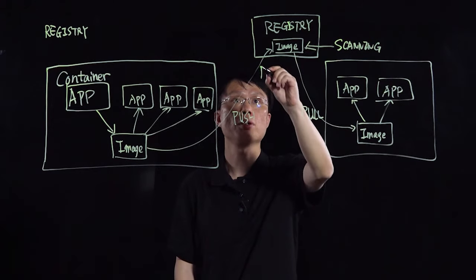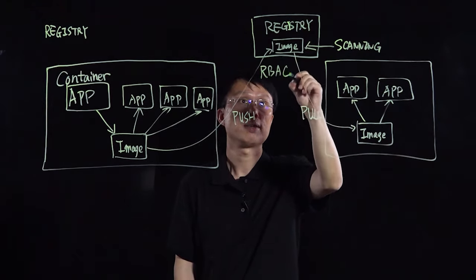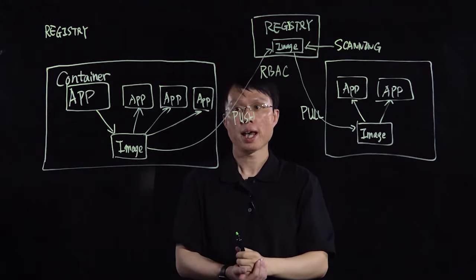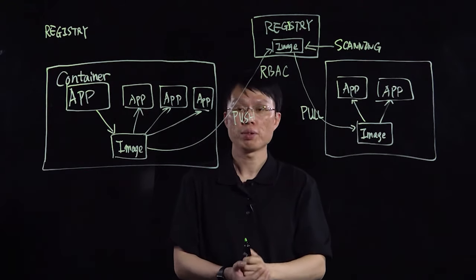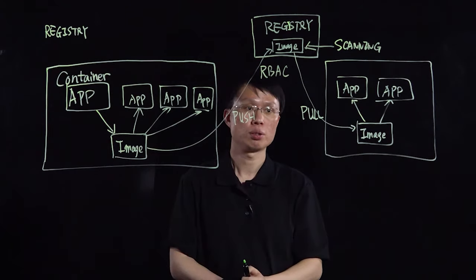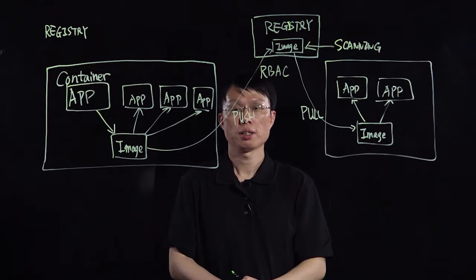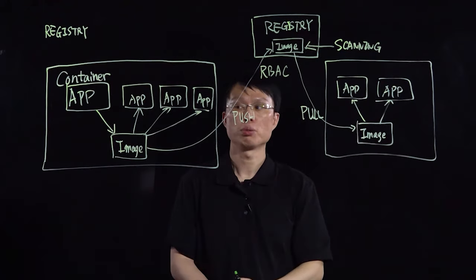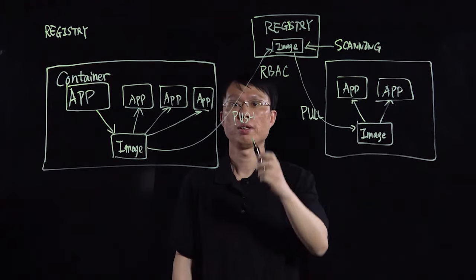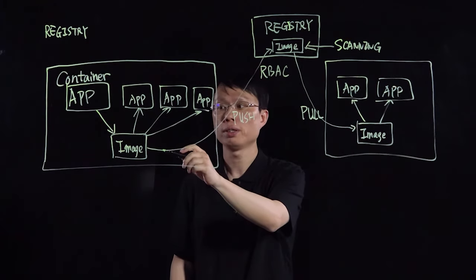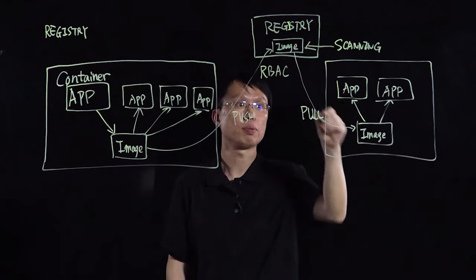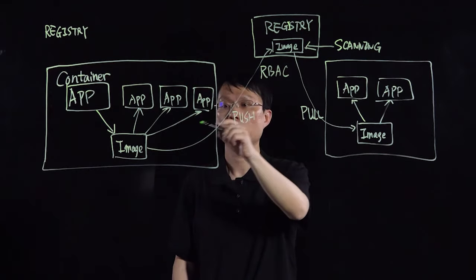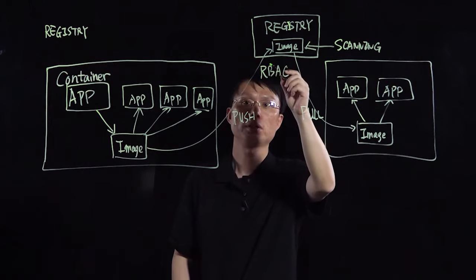Third, you can enforce role-based access control on your local images. Organizations usually have different people with different roles, and they should have different access to the images stored in the registry. So role-based access control can be applied to all the image operations to enforce the rules. For example, people with a developer role can push images to the registry and pull from the registry as well. For people with a tester role, they don't need to push to the image, so we don't give them push access.